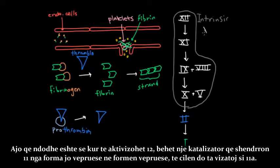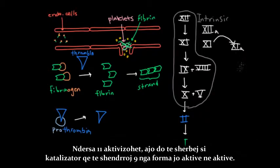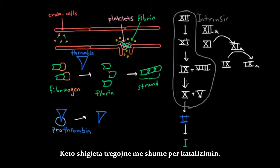What's happening is that 12, when it's activated, is a catalyst to convert 11 from its inactive form into its activated form, which we'll draw 11a. And then once 11 is activated, it serves as a catalyst to convert 9 from its inactivated form into its activated form. And so you see that these arrows are actually more about catalyzing.